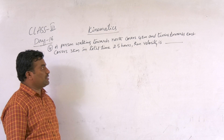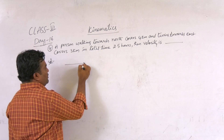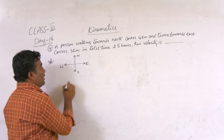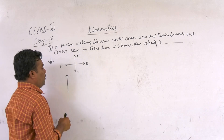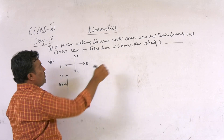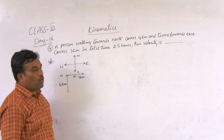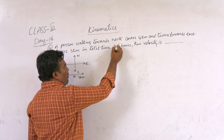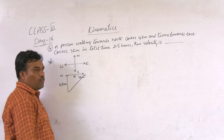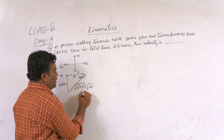A person walking towards north covers 4 km, then turns towards east and covers 3 km, in a total time of 2.5 hours. To find the total displacement, we use Pythagoras theorem: the displacement equals the square root of 4 squared plus 3 squared, which gives us the square root of 25, so the total displacement is 5 km.